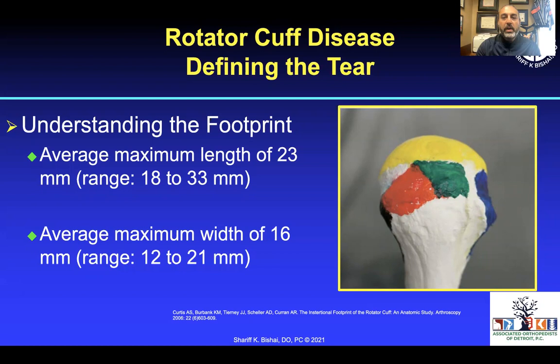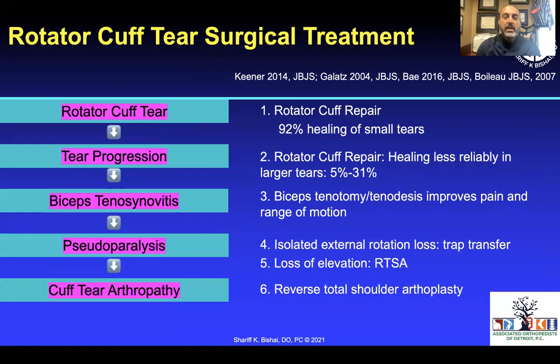You can see where the supraspinatus and infraspinatus attach, and it's important to note that in some cases the infraspinatus goes a little more lateral and posterior to the supraspinatus. Be careful — if you have an isolated supraspinatus, you may injure the infraspinatus if you try to remove some of that tissue for anchor placement.